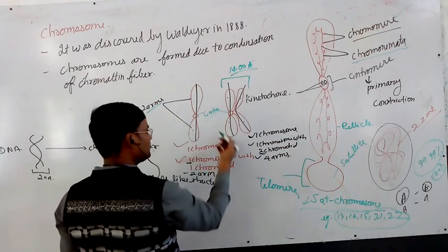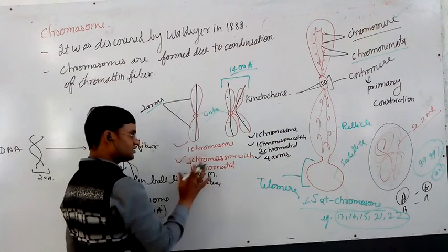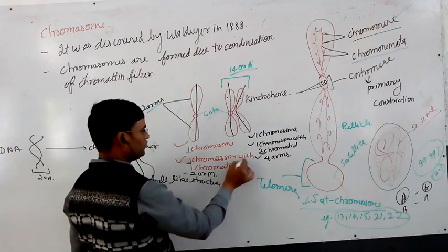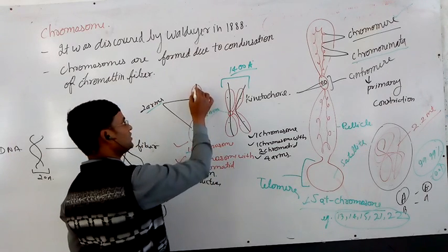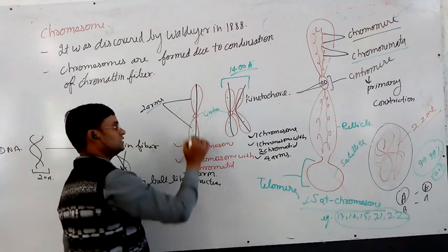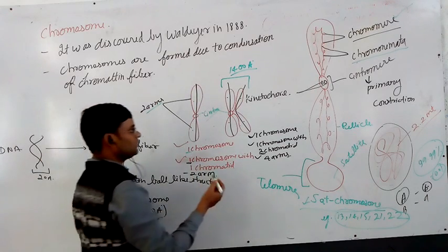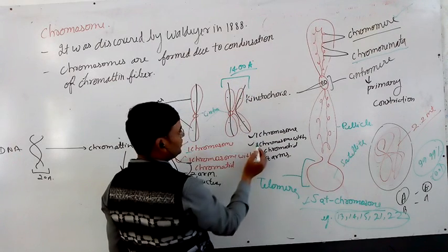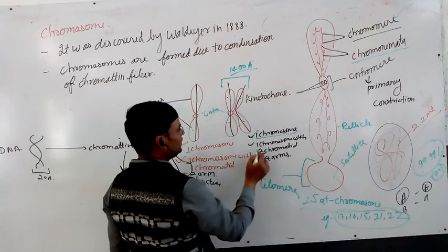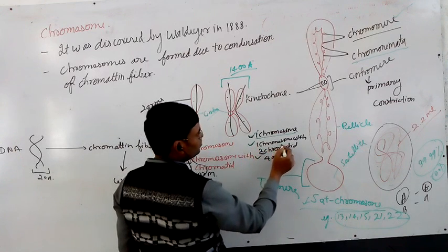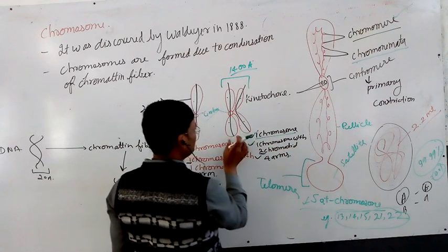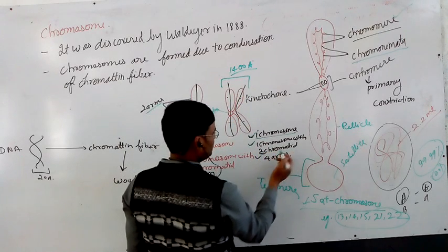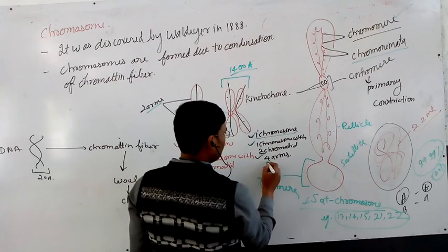This is the description of one chromosome with one chromatid. One chromosome with one chromatid, they are known as chromatid. Then one chromosome with two chromatids. Then one chromatid here and two chromatids. What is the next? Four arms.